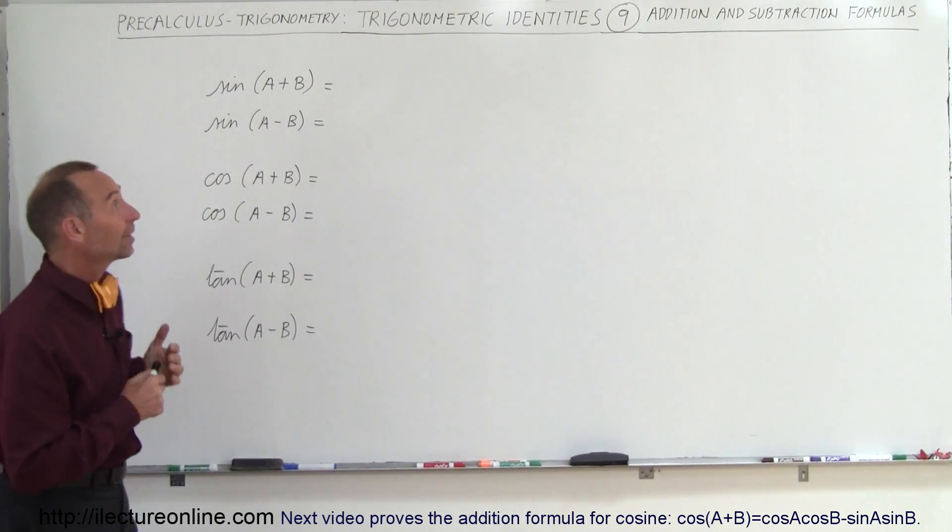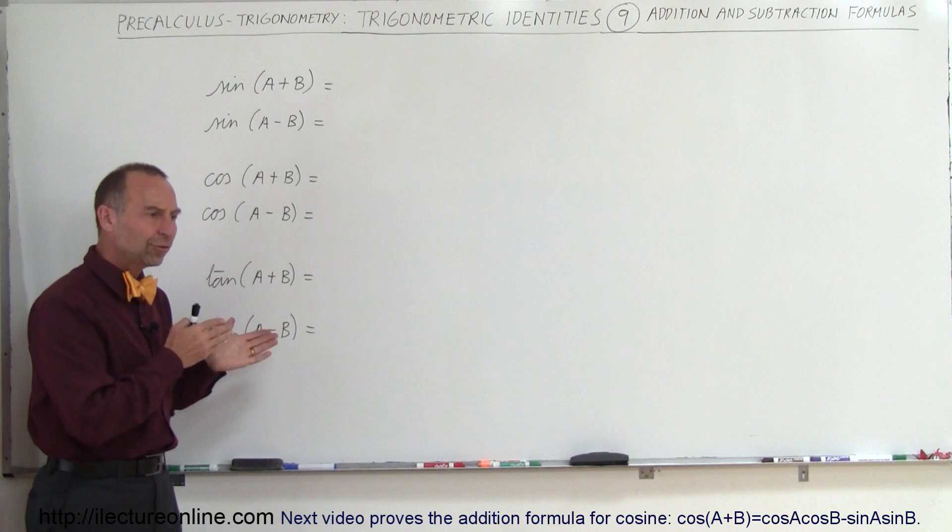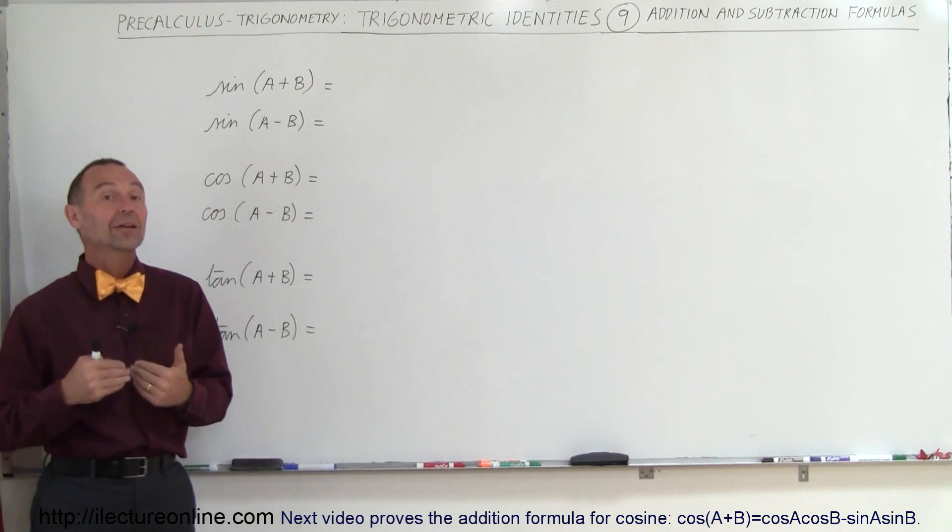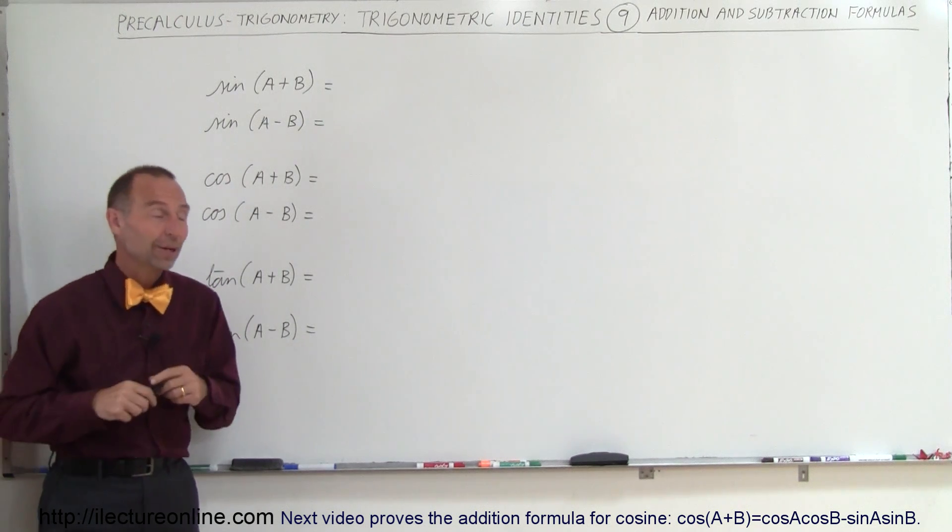Welcome to ElectronLine. Now we're going to take a look at what we call the addition and subtraction formulas. These formulas, along with the half angle formulas, are among the most useful trigonometric identities you can put in your memory.